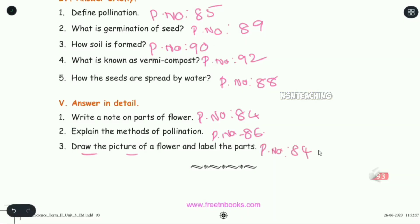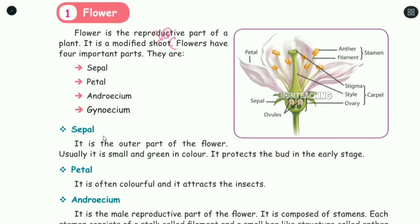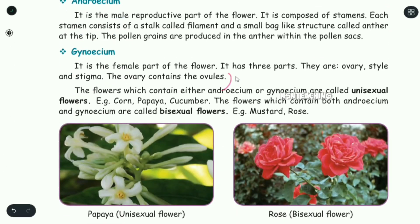Let's look at this lesson in detail. Write a note on parts of flower — page number 84. In page 84, there are 4 important parts of flowers and there are ovules at the bottom.